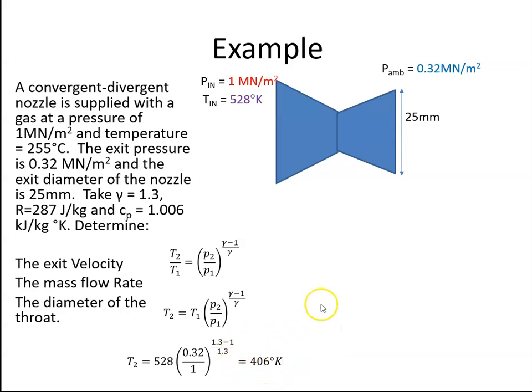If I have the temperature, I can get the velocity using this formula. So I plug in the values. CP is 1,006, so I convert this to joules per kilogram. This is 528, this is my 406, and my velocity works out to be 495.4 meters per second.